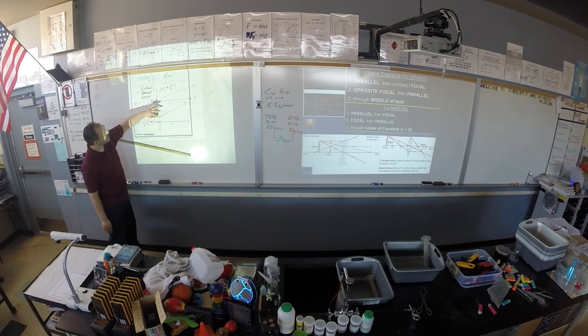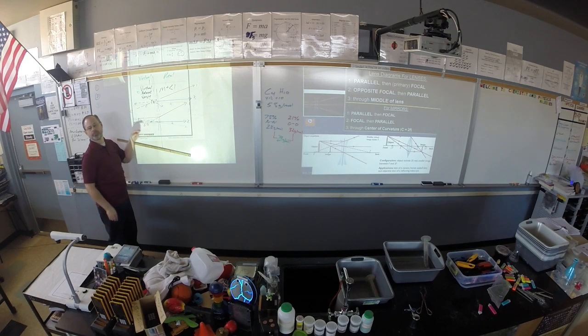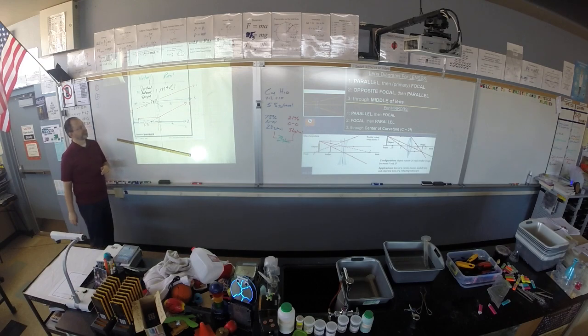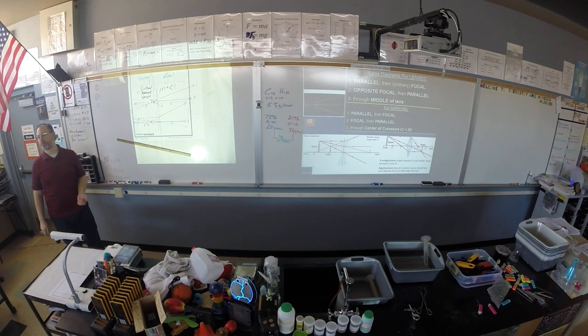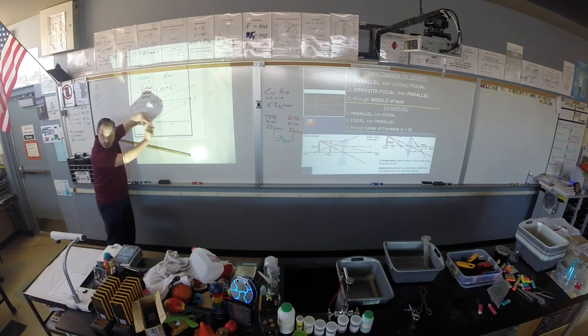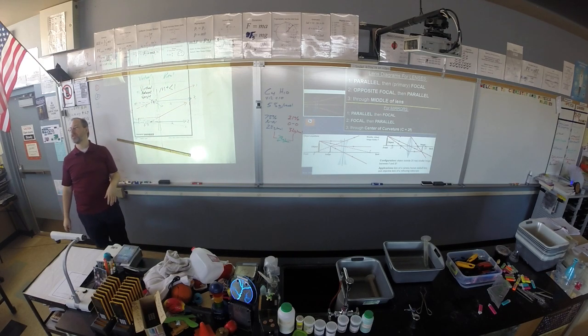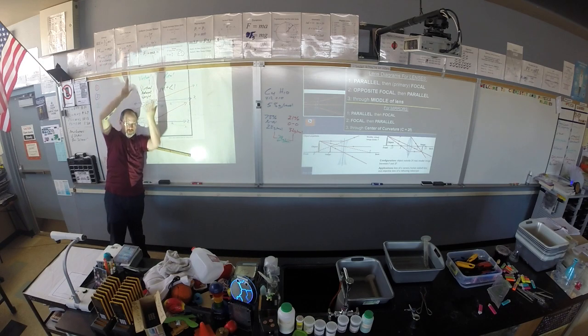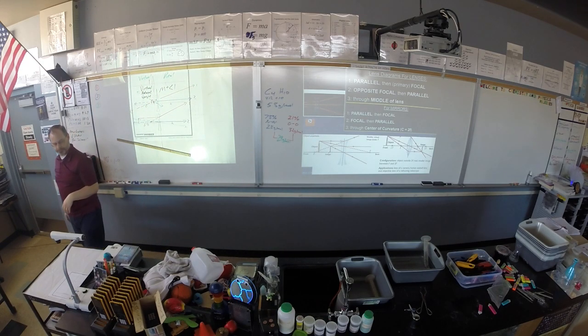So parallel, once you strike the normal, you change your straight edge to aim at the real, or sorry, the primary focal point. So parallel to focal point. If you do a diverging lens properly, your three rays will diverge. If you do a converging lens properly, your three rays will converge.